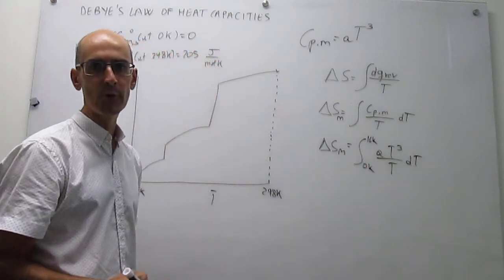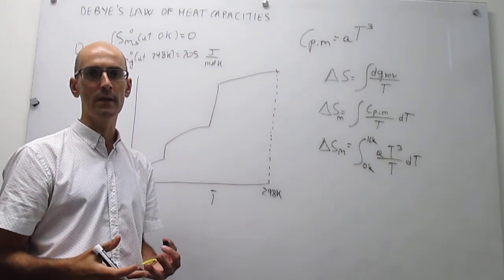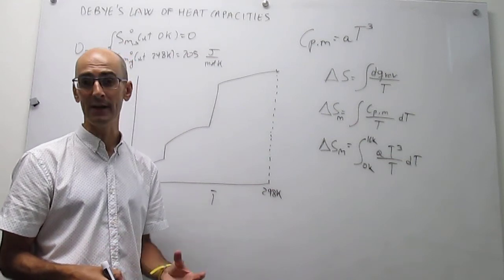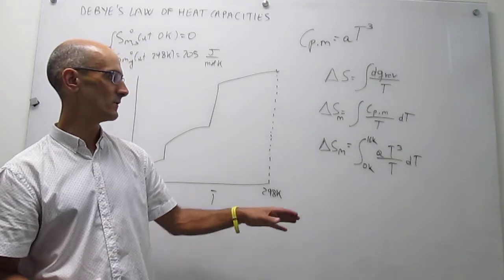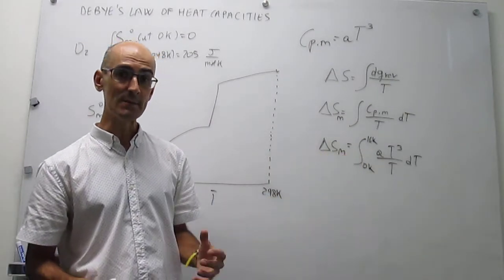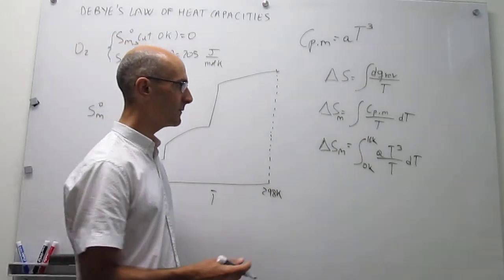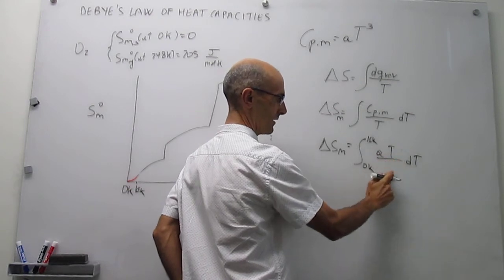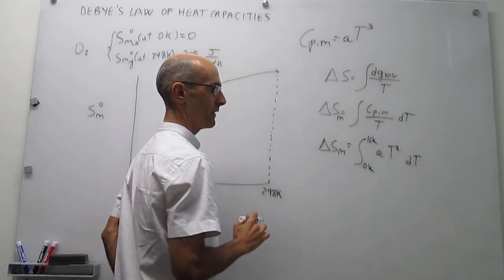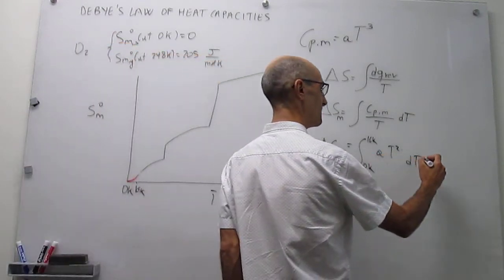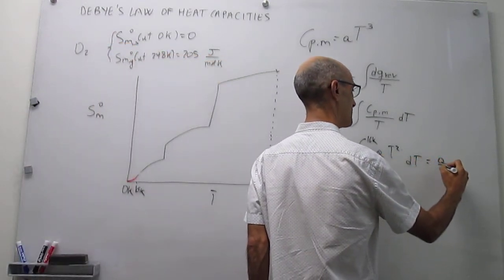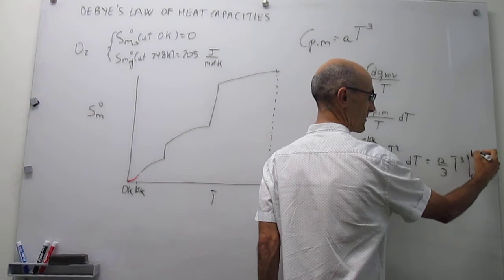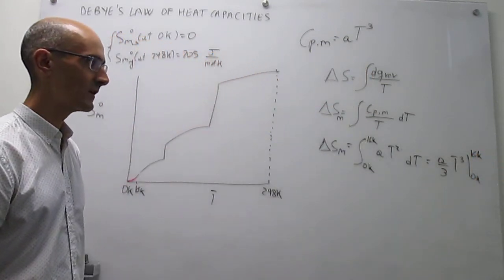This A is just a parameter that depends on the substance. So the way that a crystal of oxygen behaves is very different from the way that a crystal of ice behaves or methane and so forth. So this is a parameter that is specific to its substance. But that being said, we can actually carry out the integral quite easily. You just have to integrate that, which is going to be A thirds T cubed evaluated from 0 Kelvin to whatever temperature you're interested in. In our case that would be 16 Kelvin.